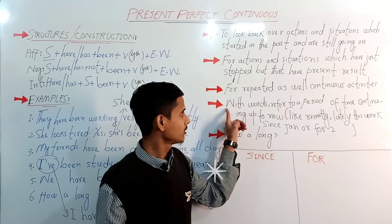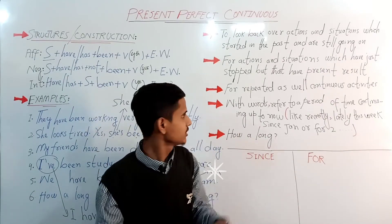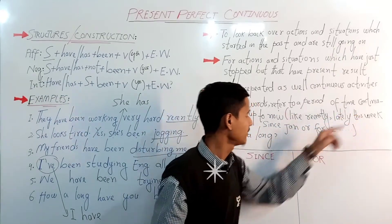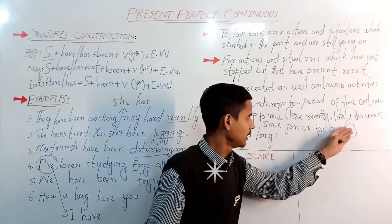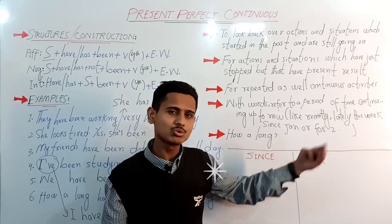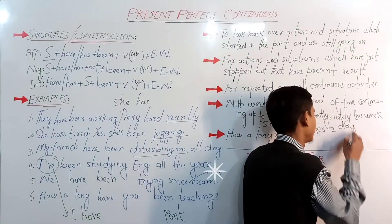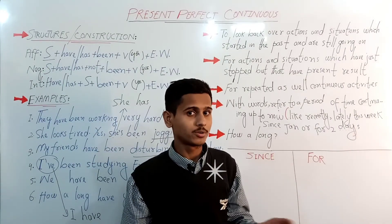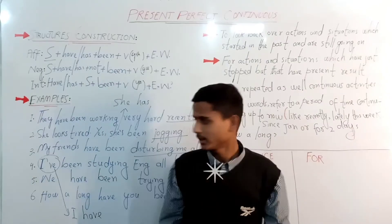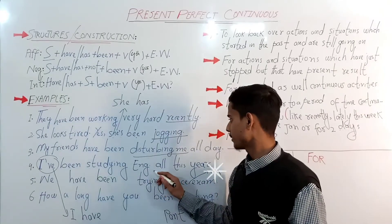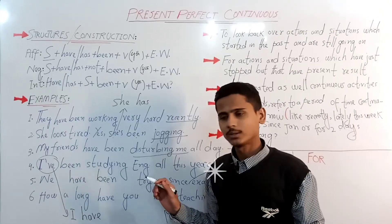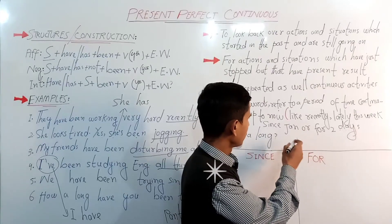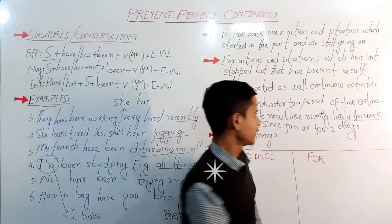The fourth usage: we use present perfect progressive with words that refer to a period of time continuing up to now, like 'recently', 'lately', 'this week', 'since January', 'for two minutes', 'for two hours', or 'for two days'. The typical example is: 'I have been studying English all this year.' Here 'all this year' corresponds to expressions like 'this week'.